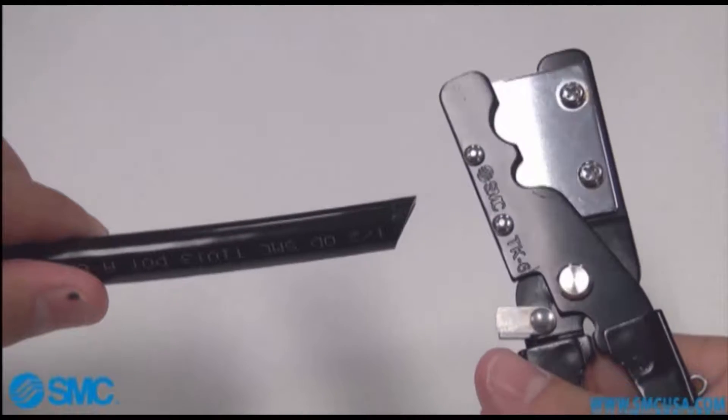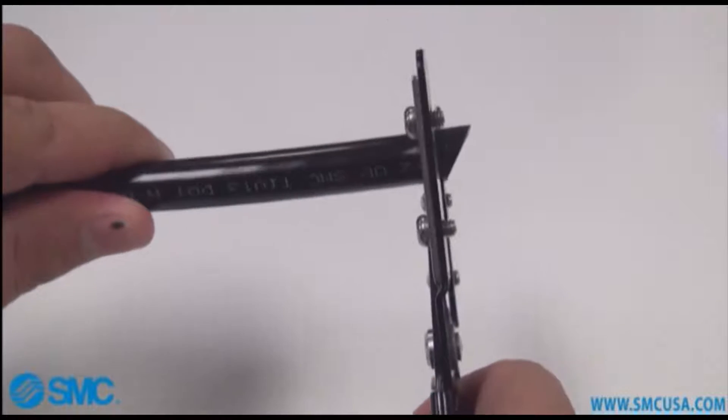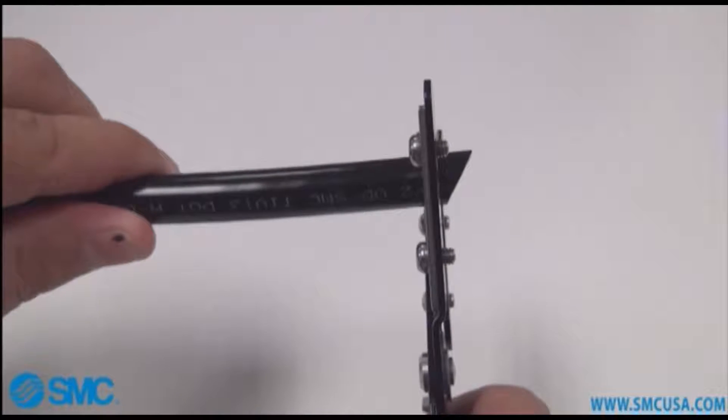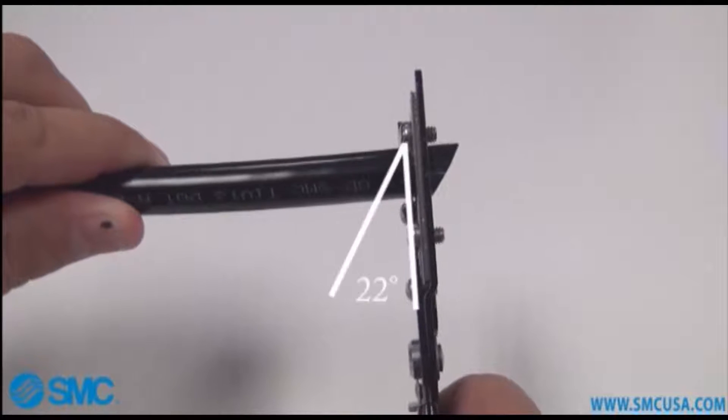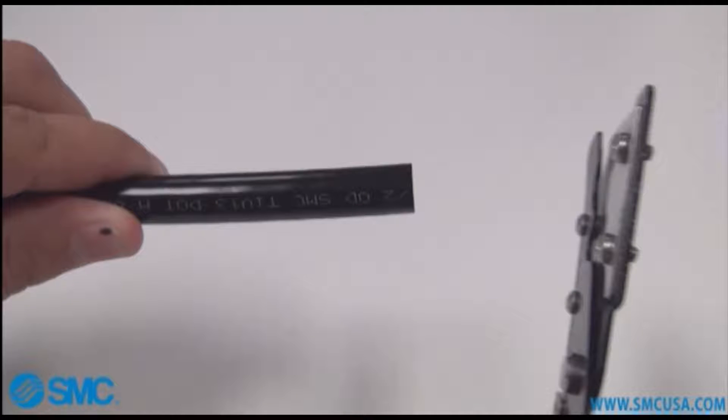Take a piece of the tubing and position it into the cutters. Pay close attention that the tube is square to the cutters. The maximum degree off of square is 22 degrees. Zero degrees is obviously the most ideal cut.